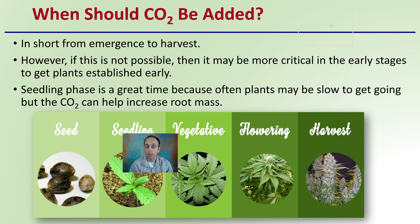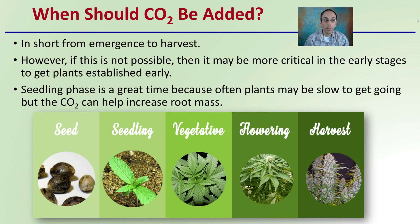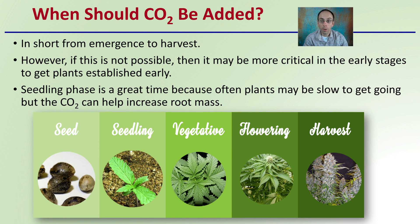When should carbon dioxide be added? In short, from emergence to harvest — it can be utilized throughout the entire life cycle. However, if not possible for the entire life cycle, it may be more critical in the early stages to get plants established. The seedling phase is a great time because plants might be slow to get going, but carbon dioxide can help increase root mass, which is especially important in the early stages of plant growth.